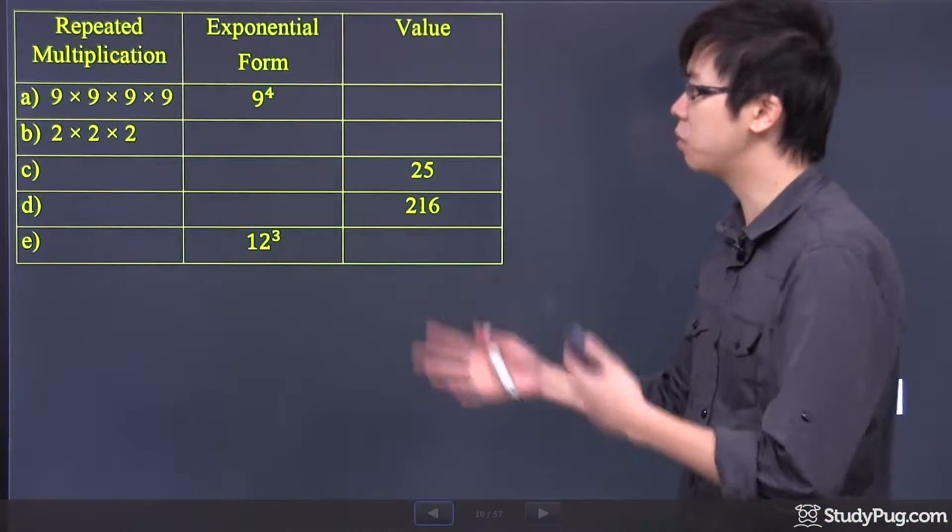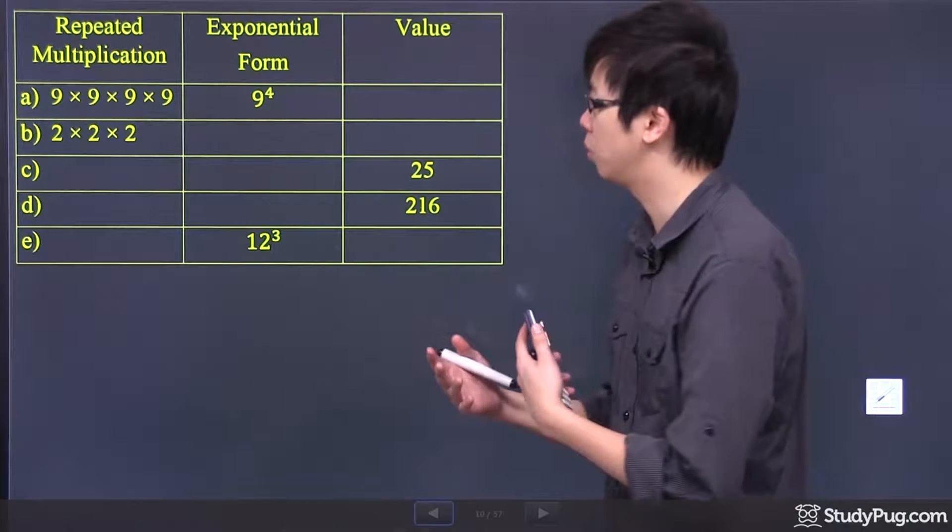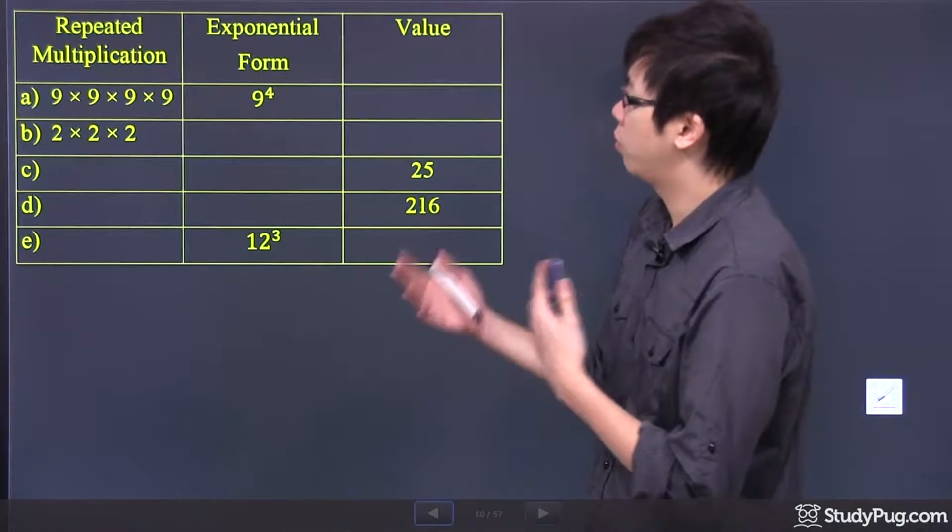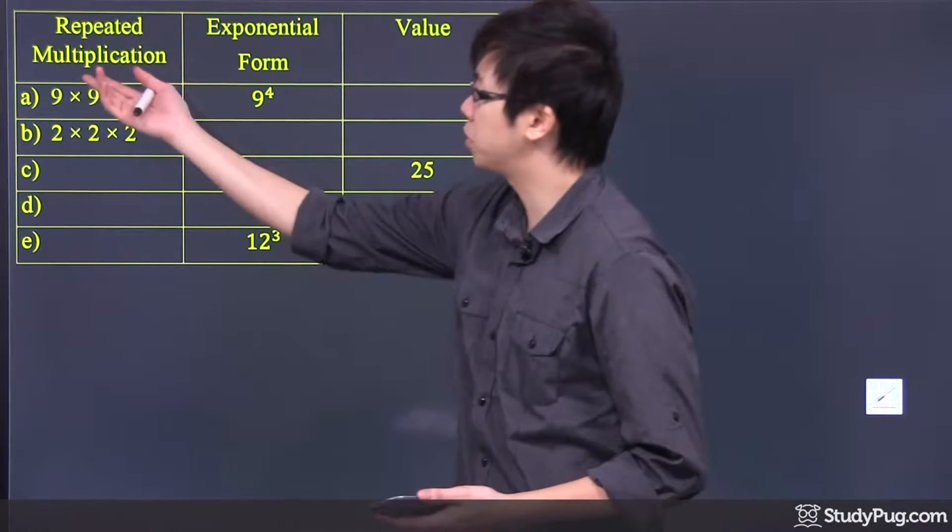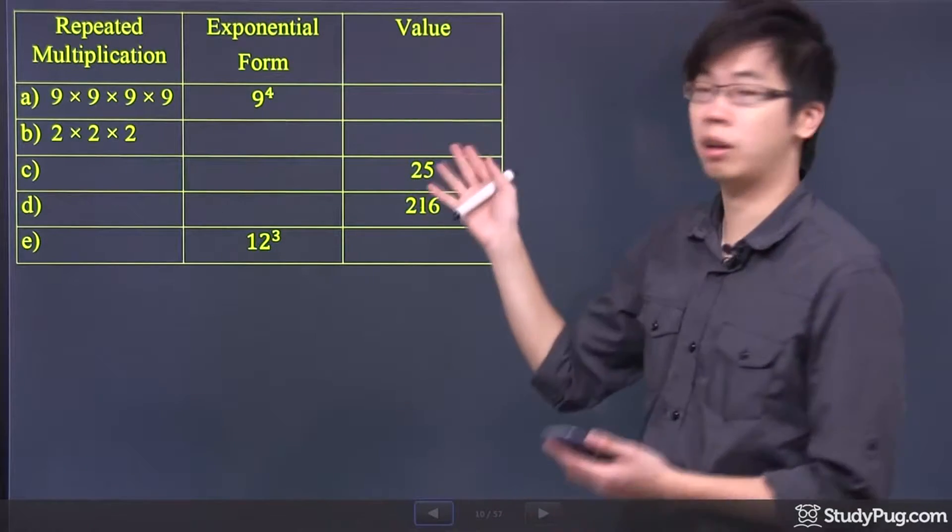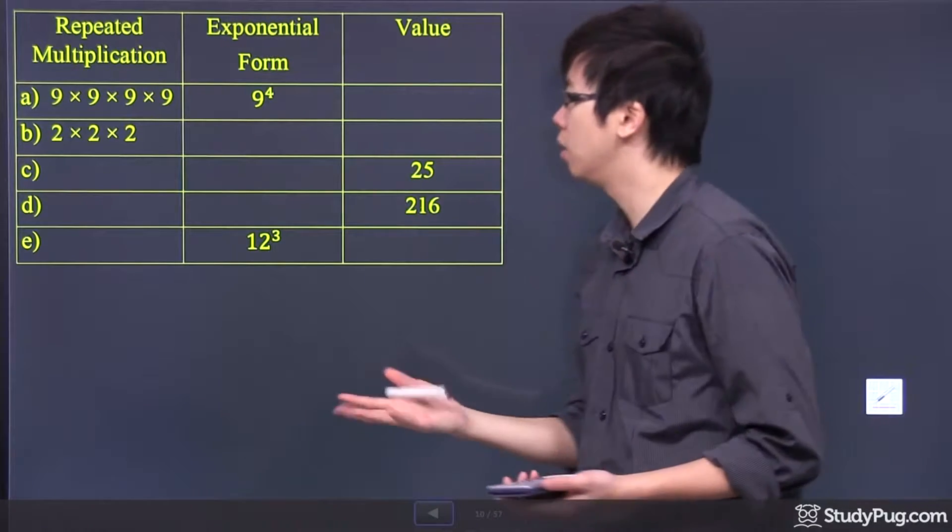Hi, welcome to this question right here. Sometimes we give it as a table, just to demonstrate the relationship between the repeated multiplication and exponential form, and the value of the answer.